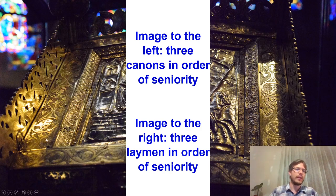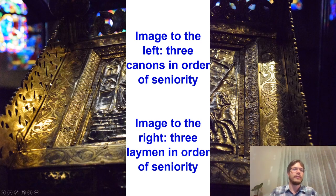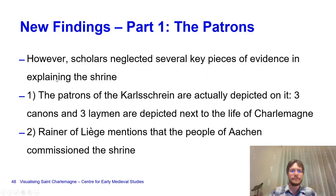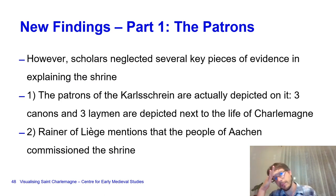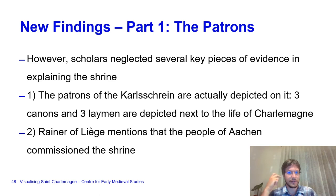On the left-hand side we have the canons, of which the lowest is cowled and bearded and looks somewhat old; in the middle, a cowled tonsured monk without a beard; and on top, a young man without a beard, possibly also a canon. Number two, Rainer of Liège, a 13th-century historian, mentions that the people of Aachen commissioned the shrine. Therefore, one should not think the emperor commissioned it—the evidence clearly states the opposite; it is the locals who did so.